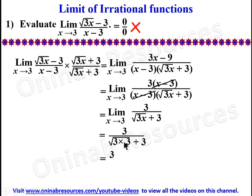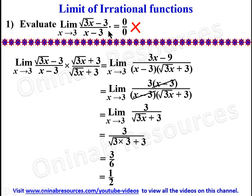Root(3 times 3) gives root 9, and root 9 is 3, plus 3 gives 6. So the answer is 3 over 6, which equals 1 over 2. That is the solution. In this problem the irrational part was in the numerator; the denominator may also have the irrational part, as we'll see in the next example.